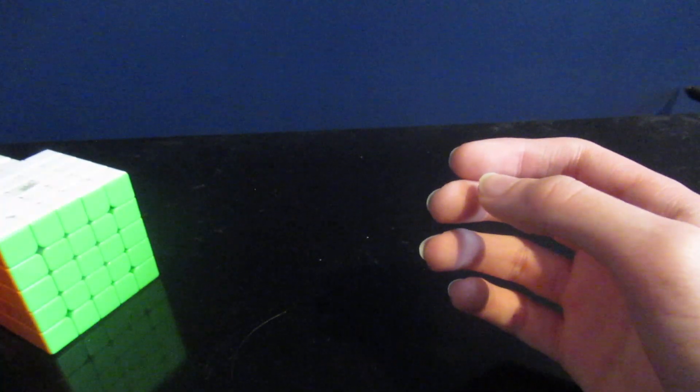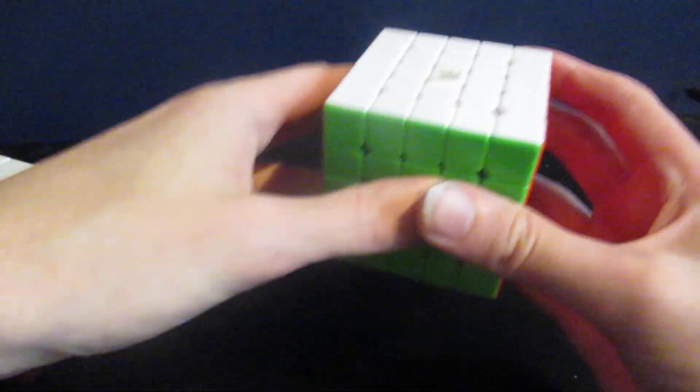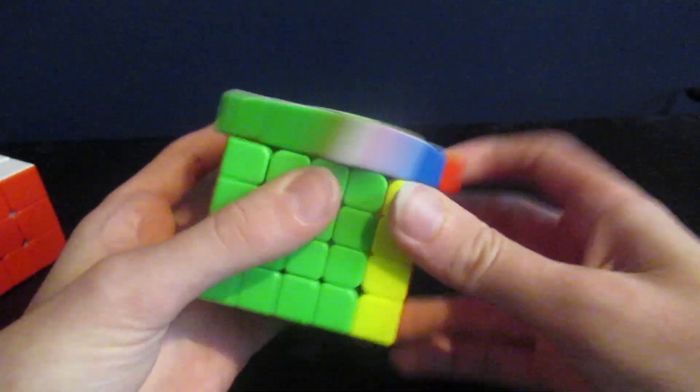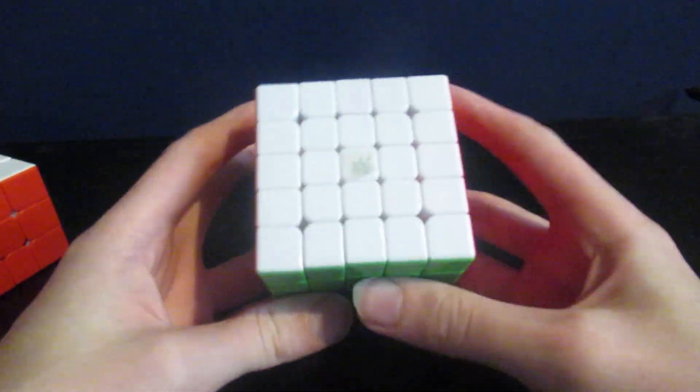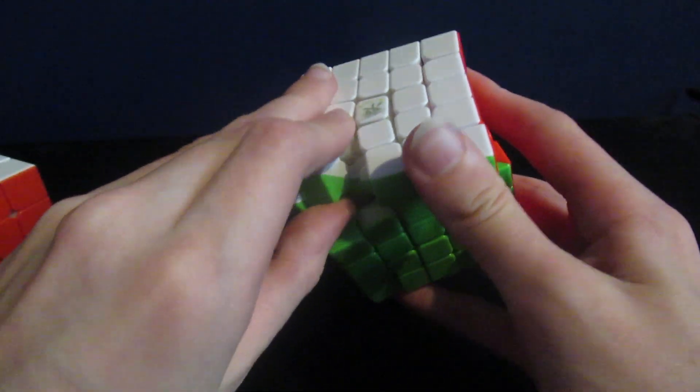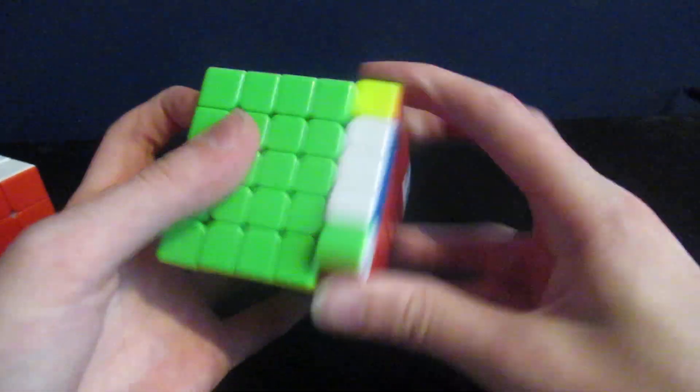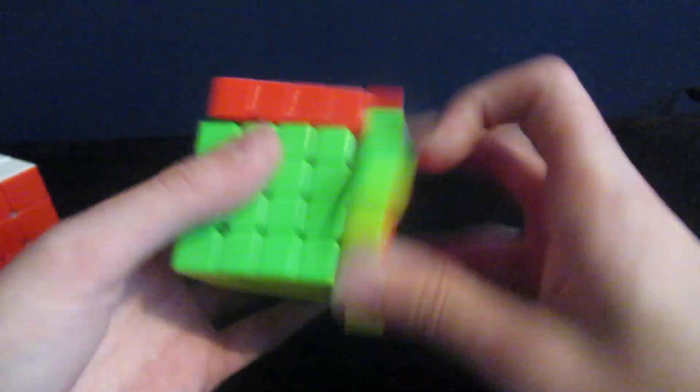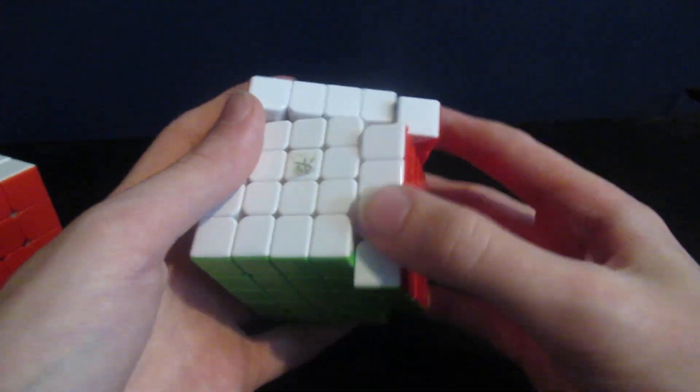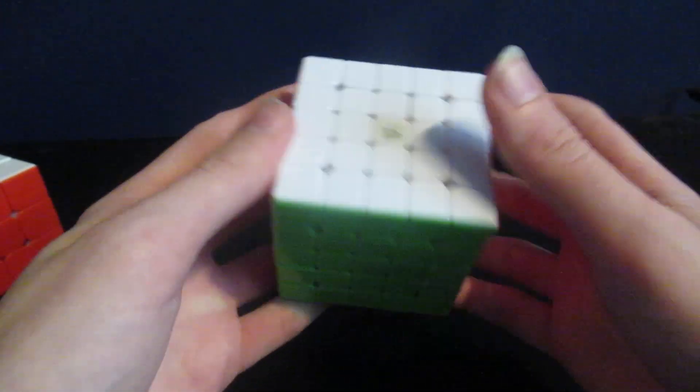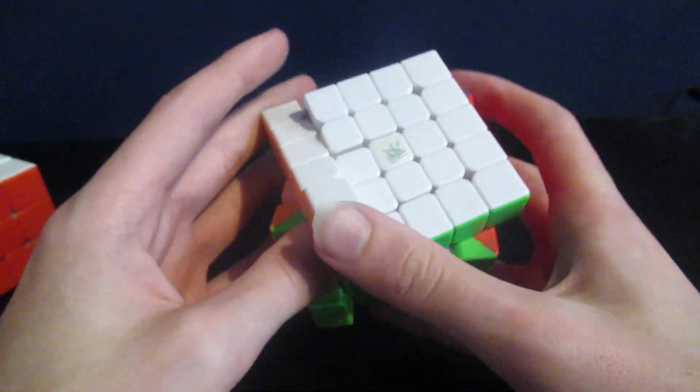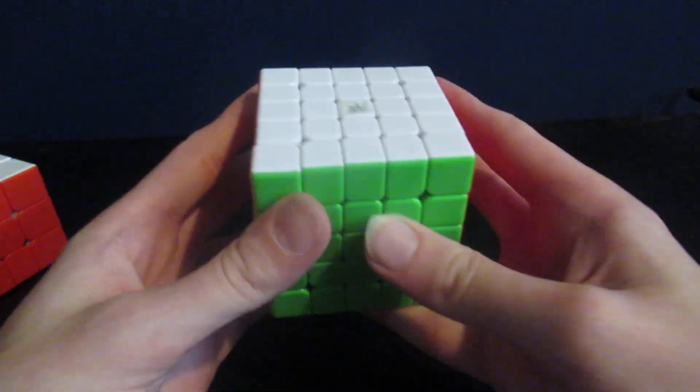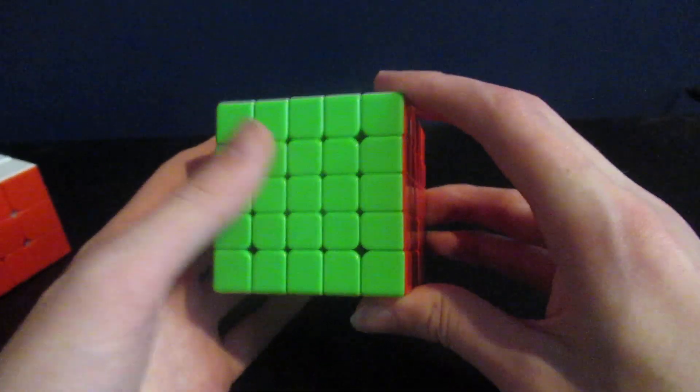For 5x5 I'm using the Dian 5x5. I've had this for two years and I will definitely get the Gan 5x5 or the Hong when I actually need one, but for now this still does okay. My goals are a decent average, sub 140. I have no goals for the single, so let's just hope for sub 140 average.